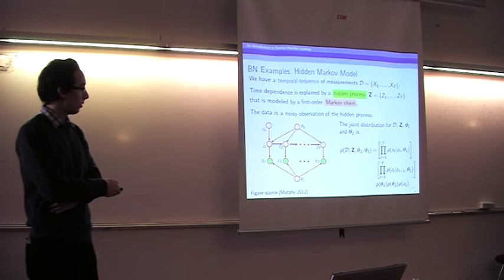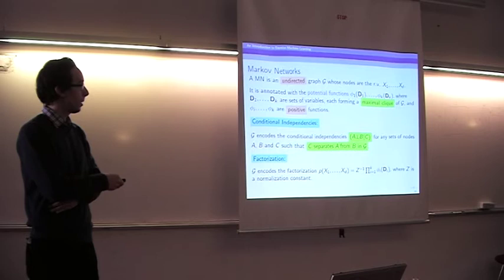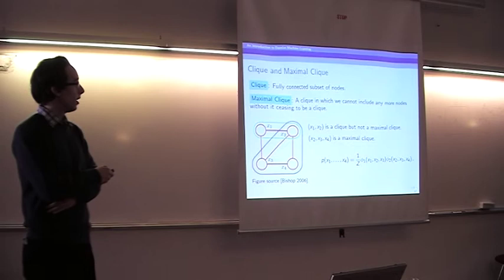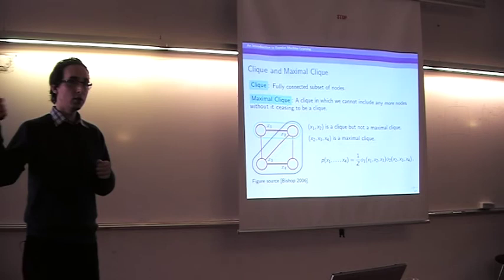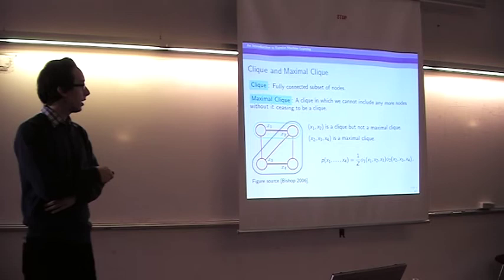The potentials are functions on the maximal cliques of the graph. A clique is a set of fully connected nodes — a set where all possible connections exist. A maximal clique is a clique that cannot include any more nodes without ceasing to be a clique. For example, X1 and X2 form a clique but it is not maximal because we could add X3; the maximal clique is X1, X2, and X3 together.